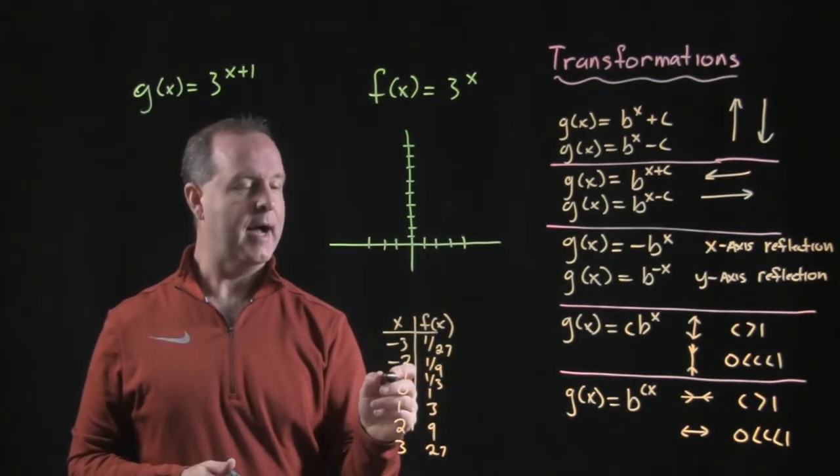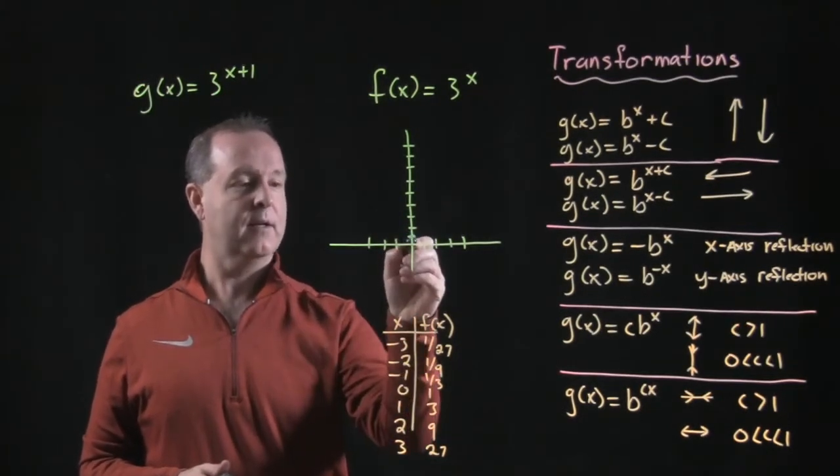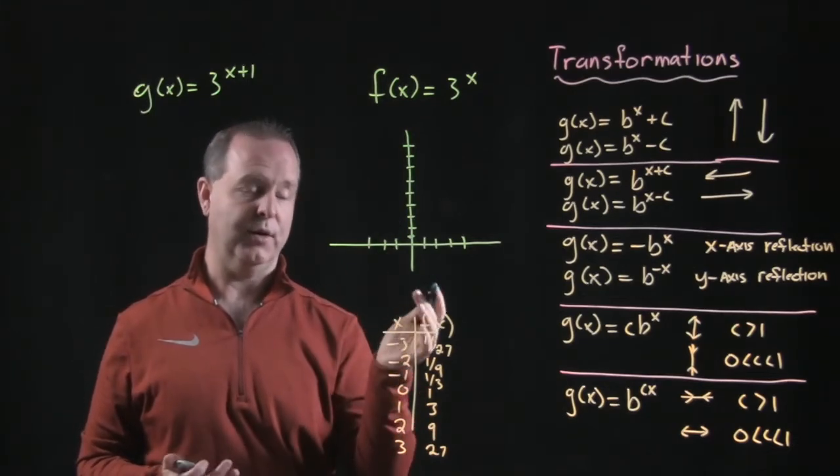Negative 1. Yeah, much better, right? 0 is at 1, which is cool. Every exponential function goes to the point 0 and 1.